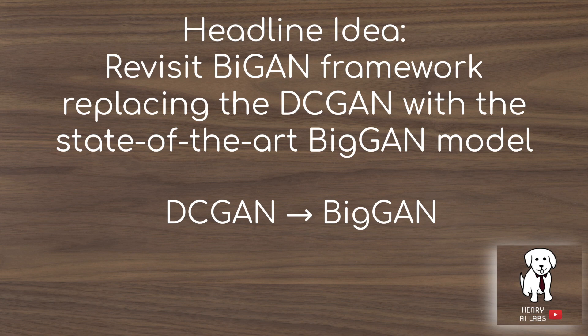The BigGAN model has way more parameters than the DCGAN, and it also has things like spectral normalization, self-attention layers, and a projection layer for the class embedding. DCGAN doesn't even have class embeddings in the framework at all.